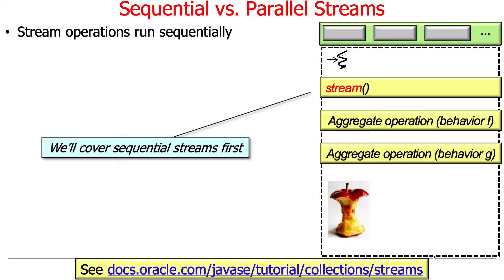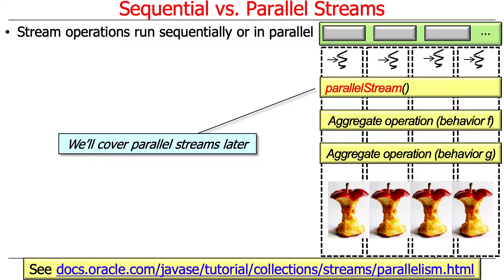By default, stream operations run sequentially. If you just say stream, then you have a single thread of control, which will be mapped to one core — at any given point in time it's only mapped to one core — and it'll be processing the behaviors specified on the source of data that it's pulling from.